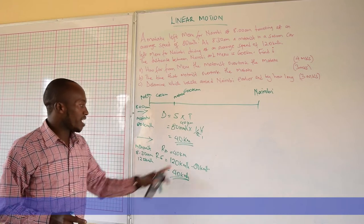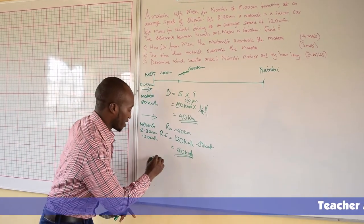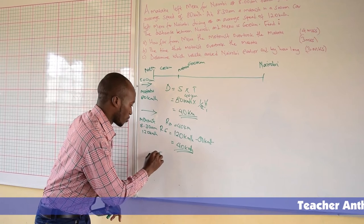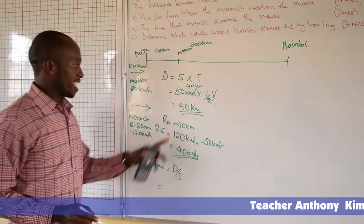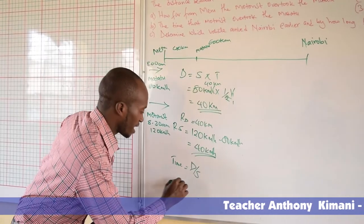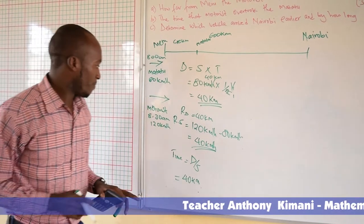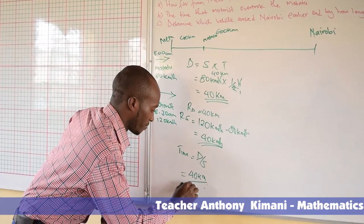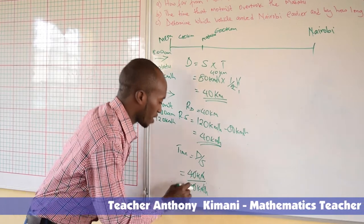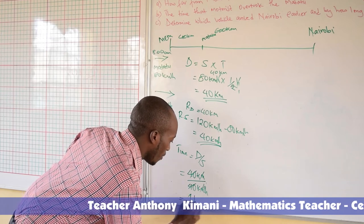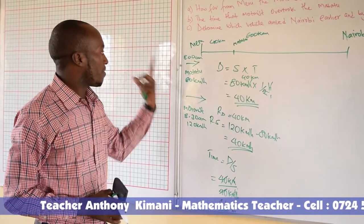We have the speed and we have the distance, so we first calculate the time taken for the two vehicles to meet. Time equals distance over speed: distance is 40 km divided by the relative speed of 40 km per hour, which gives 1 hour. It took 1 hour for the motorist to catch up with the Matatu.